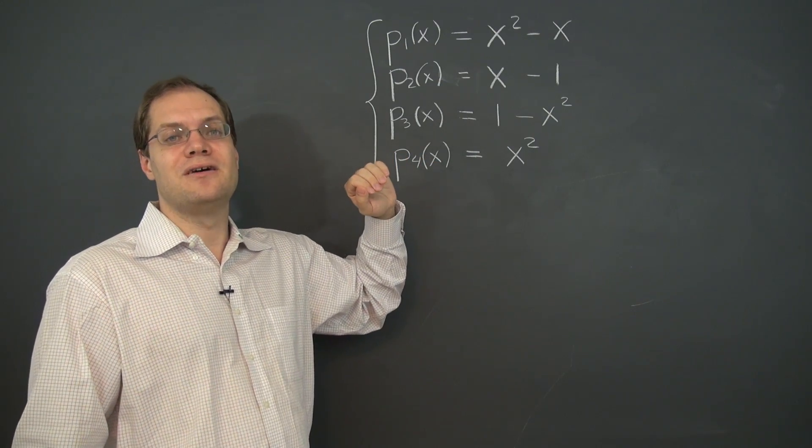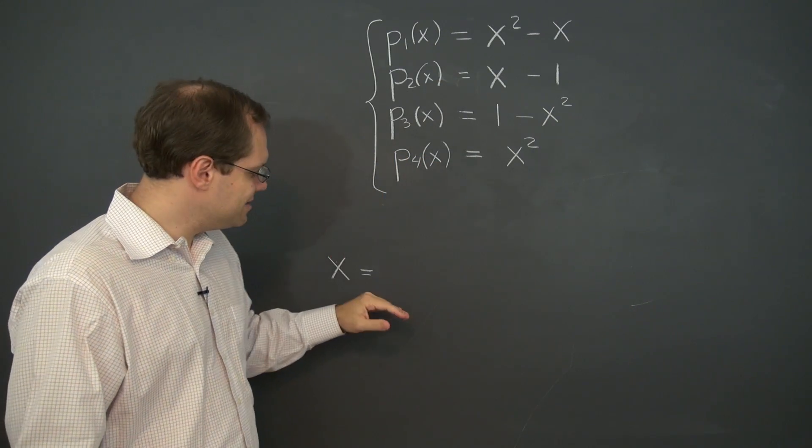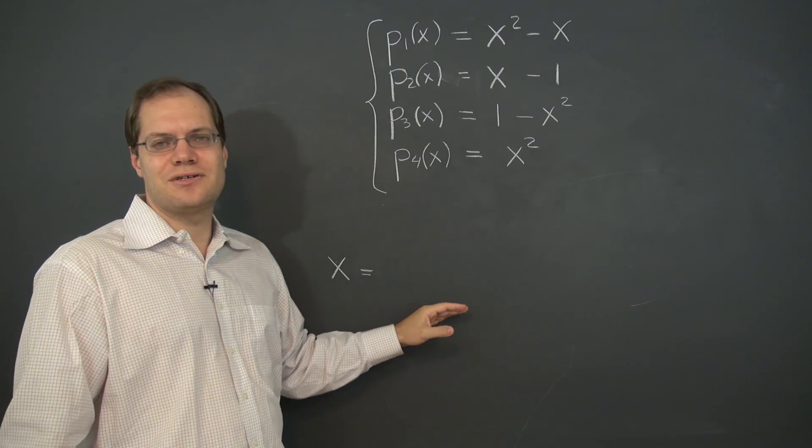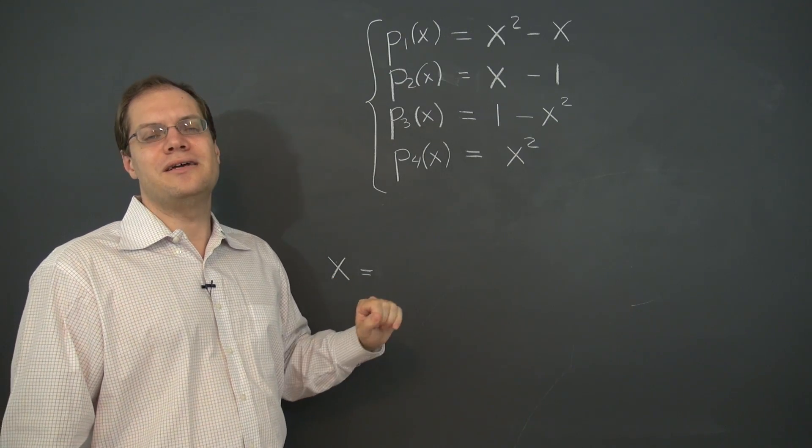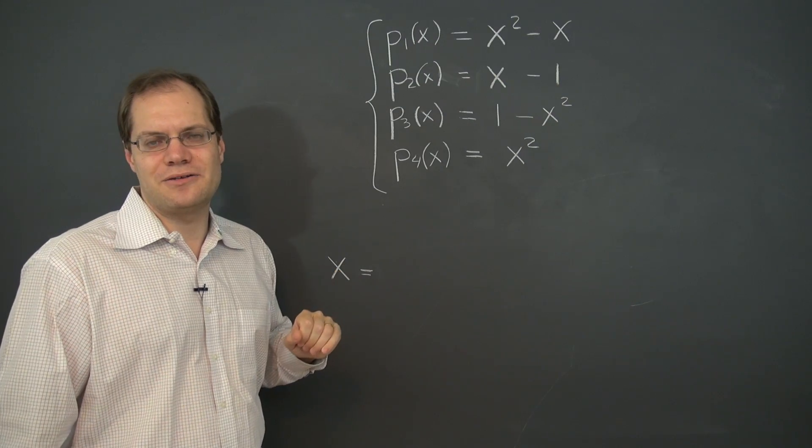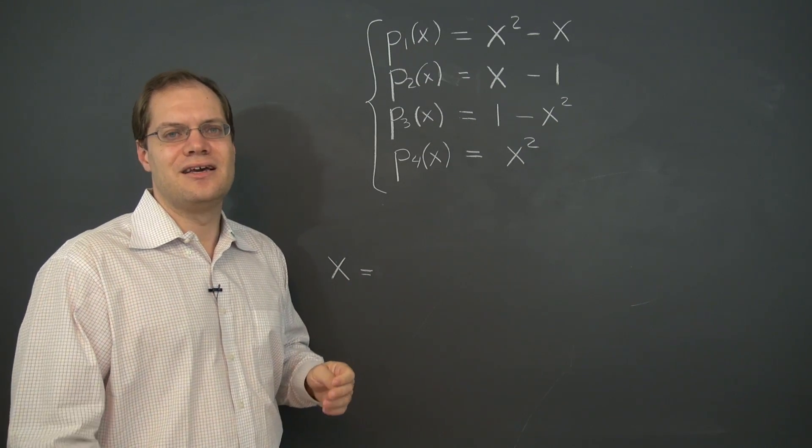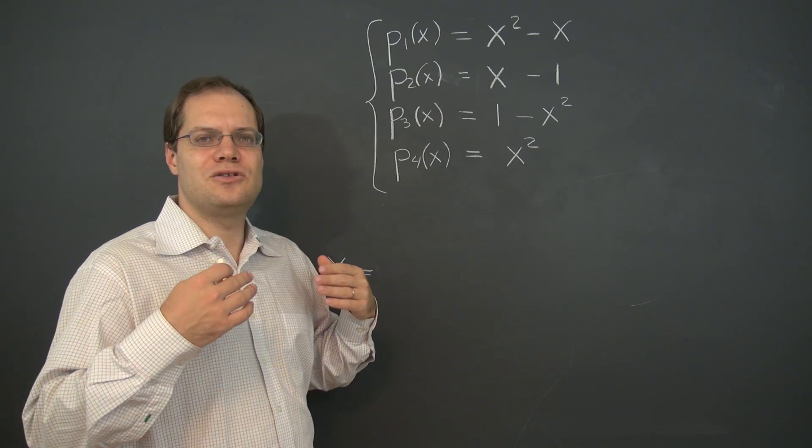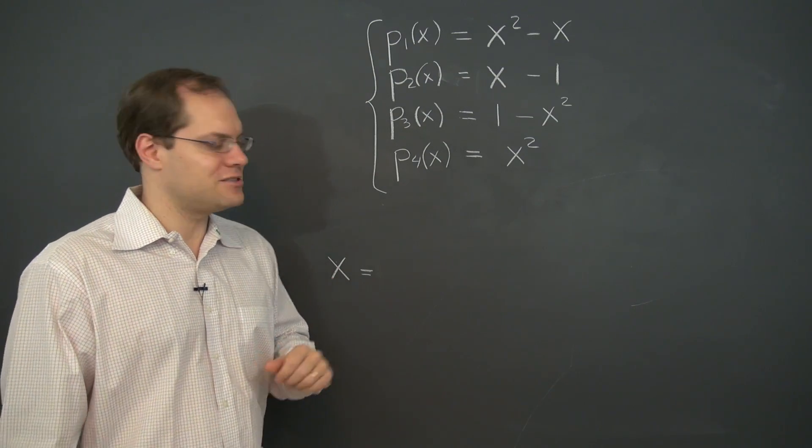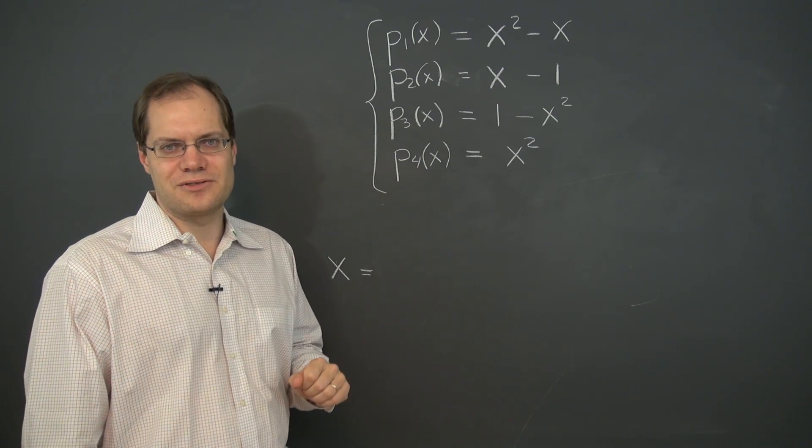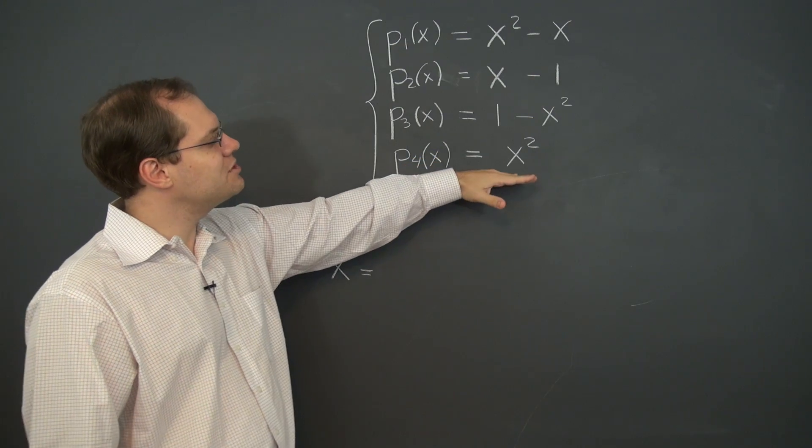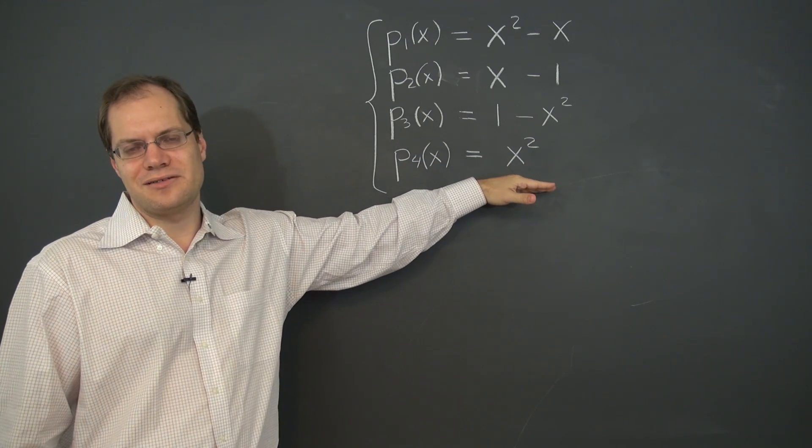So that concept of linear dependence and decomposition and capturing all possible ways to decompose x as linear combinations of these polynomials, all of these ideas carry over in a totally straightforward fashion to the case of polynomials. So let's see. How do we tell that these polynomials are linearly dependent?